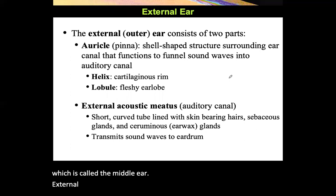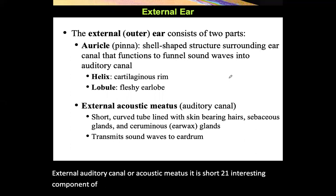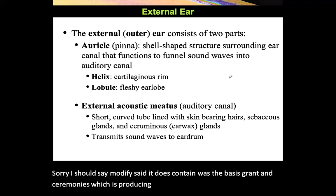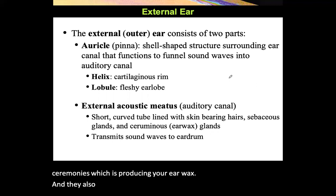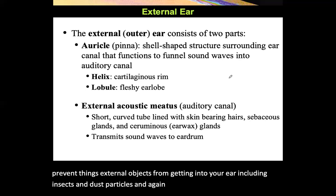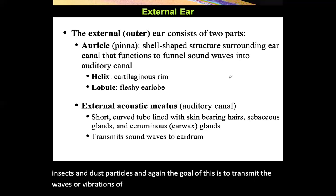The external auditory canal, or acoustic meatus, is a short tube. It contains sebaceous glands and ceruminous glands, which produce earwax, as well as a tiny amount of hair. The main goal of these is to prevent external objects — including insects and dust particles — from entering the ear. The overall goal is to transmit sound wave vibrations through the hearing passageway.